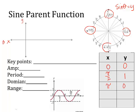The next angle is down here at three pi over two. What's the y coordinate? Negative one. And then we come all the way back up to two pi. The y coordinate is back to zero.